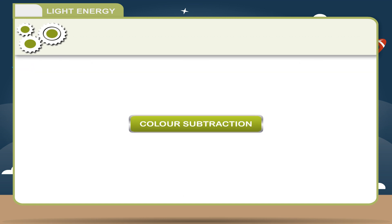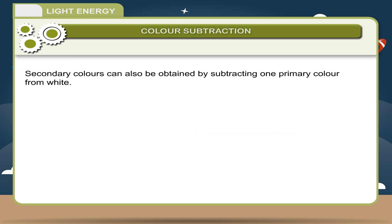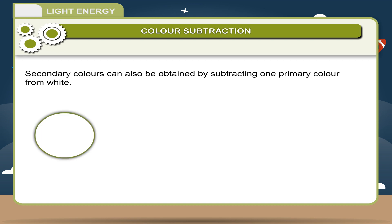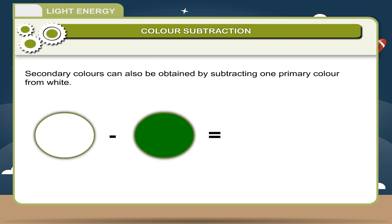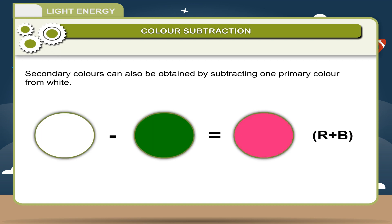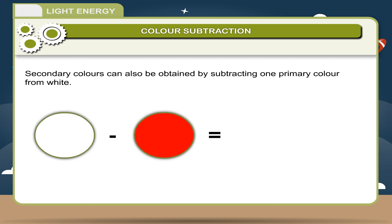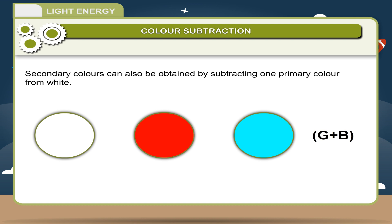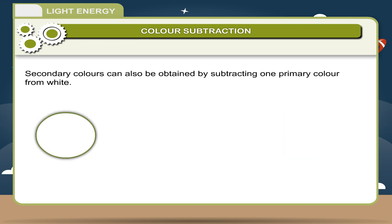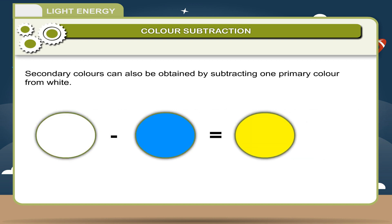Color Subtraction: Secondary colors can be obtained by subtracting one primary color from white. White − Green = Magenta (Red + Blue). White − Red = Cyan (Green + Blue). White − Blue = Yellow (Red + Green).